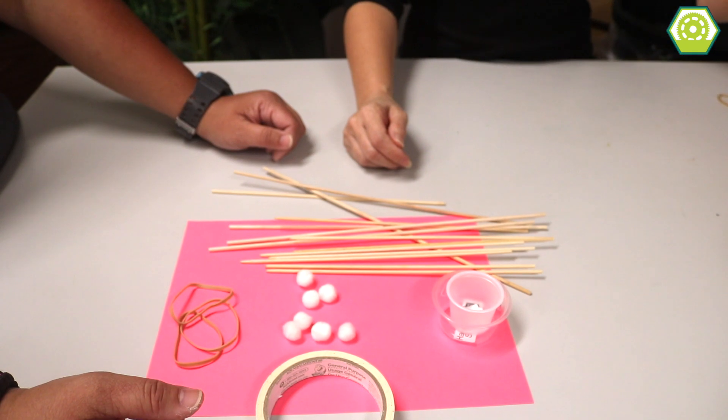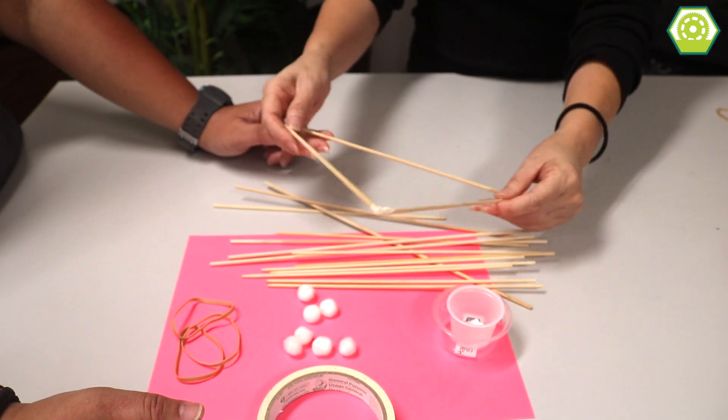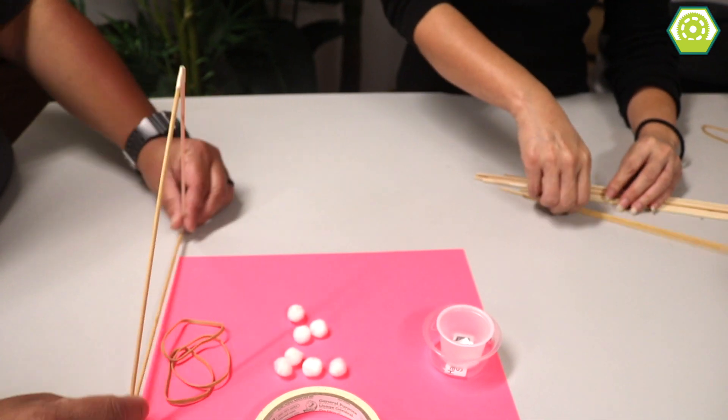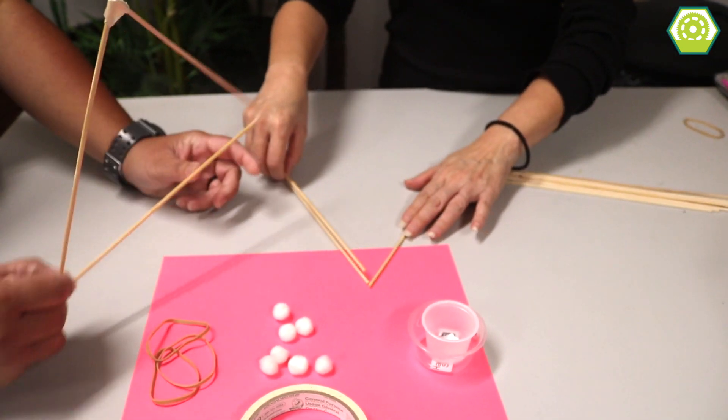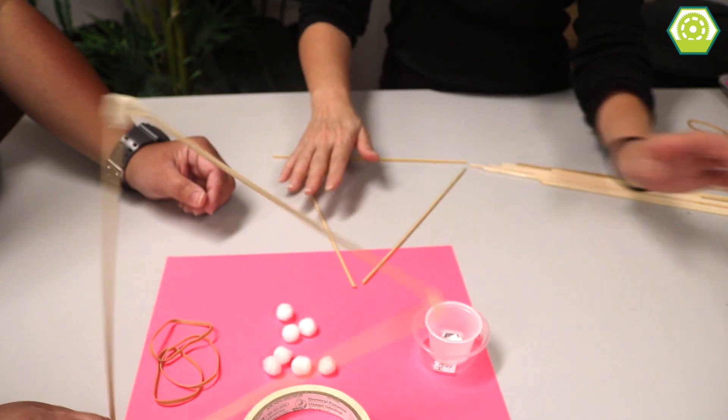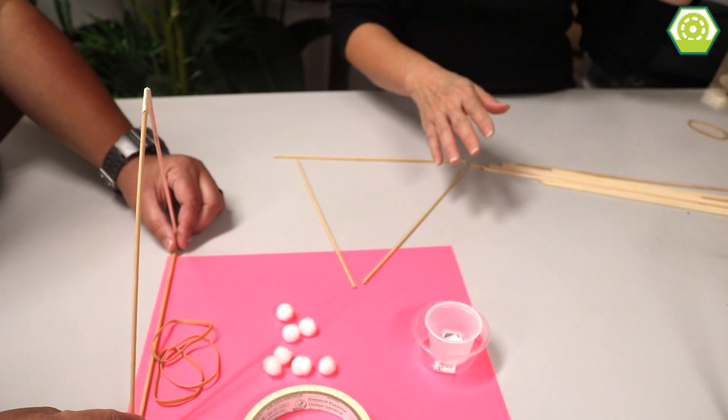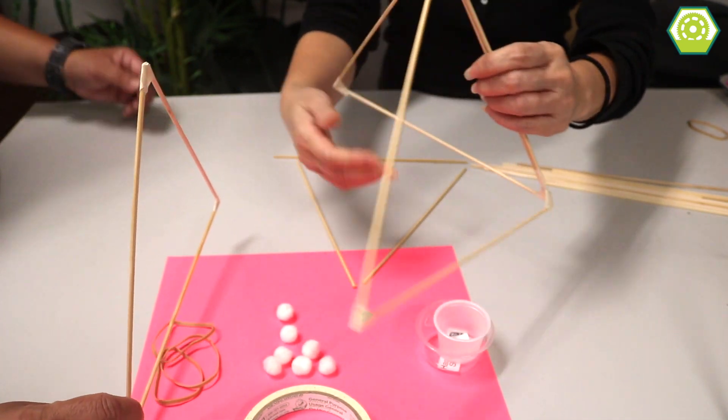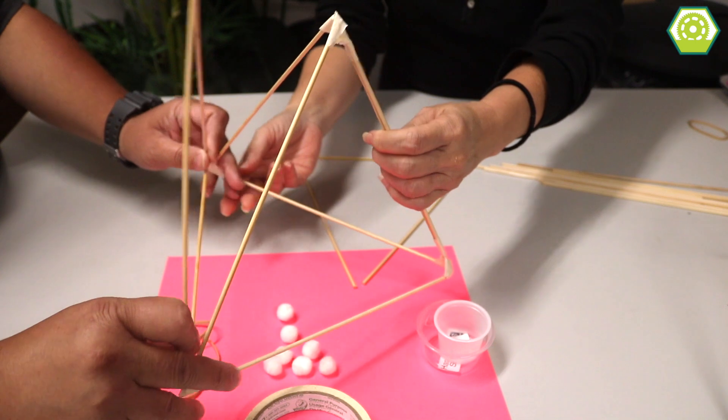So what you're going to do is you're actually going to put three skewers together and make a triangle. So you make a triangle, and then you make three triangles. Tape it just like this. And then you need to create a pyramid. So a pyramid has three sides. So you're going to make one, two, three, and then we're just going to tape this together just like that.